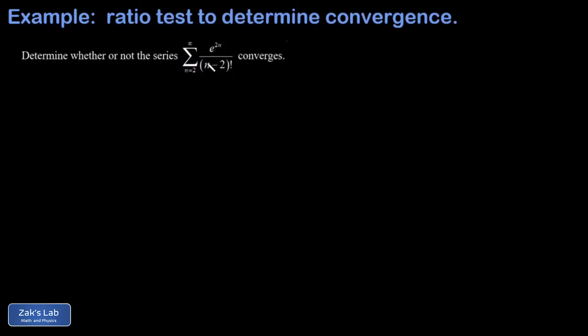In this video, we're testing the convergence of the series e to the 2n over n minus 2 factorial, as n goes from 2 to infinity. And we're going to use the ratio test for this.